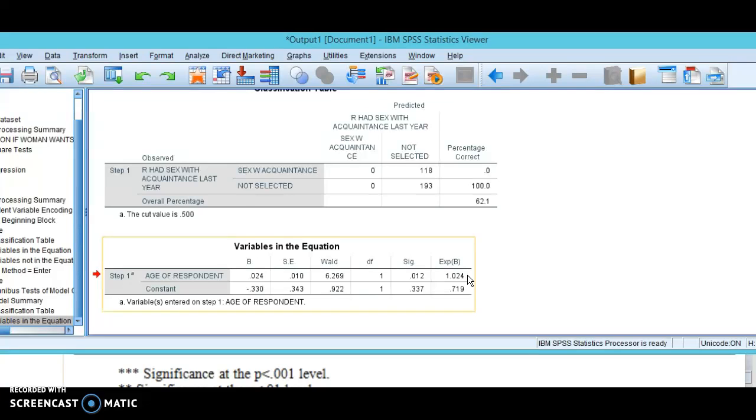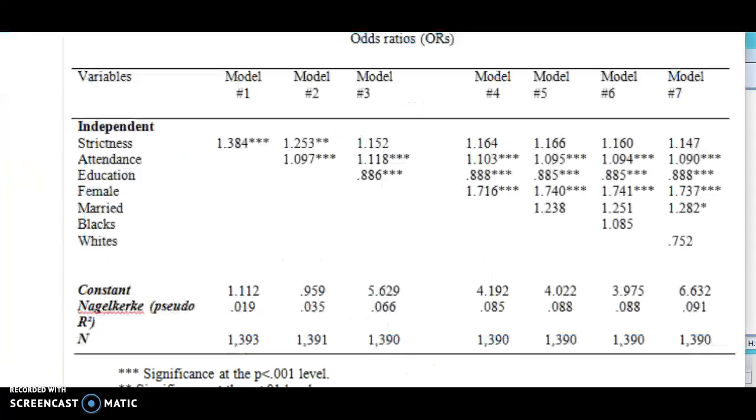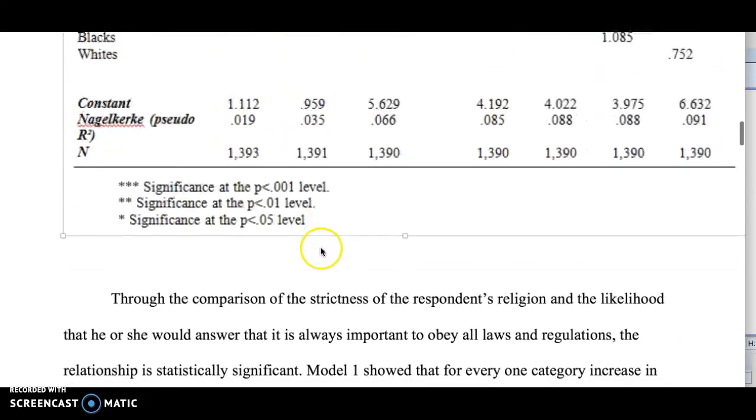That's why we make predictions of likelihoods of being in that category, so it's a little different than linear. This 1.024, that is the odds ratio or the exponential B, and that would go here in the table and then we'd have to put stars next to it according to how significant it is.